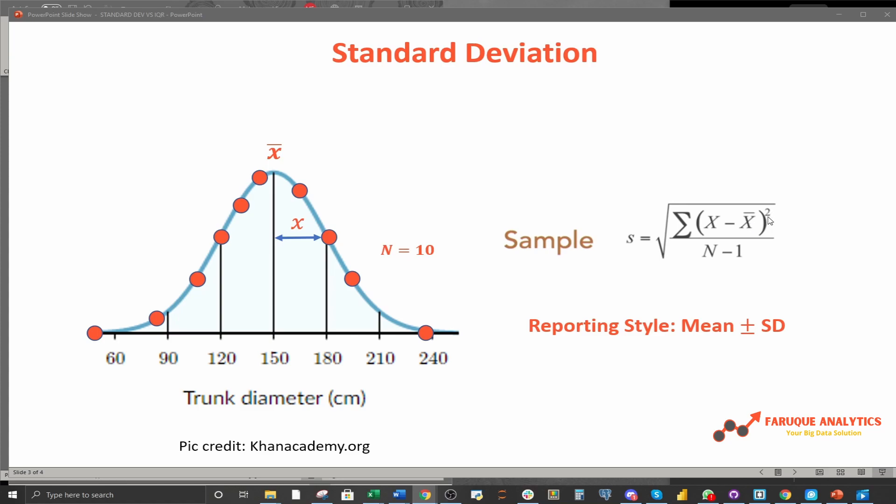Squaring will get rid of any negative numbers that you will come across. And this Greek symbol here means adding all of those individual x minus x bar squared. Once we have that, we'll be dividing it by n minus 1. And here n is the number of samples. You might be thinking, if it is average, why aren't we just dividing by the number of samples, just like we do when calculating average?